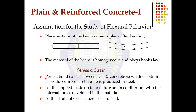The next assumption is that a perfect bond exists between steel and concrete, so whatever strain is produced in the concrete, the same strain is produced in the steel. All applied loads up to failure are in equilibrium with the internal forces in the material. At a strain of 0.003, concrete is crushed — meaning the crushing strain is assumed to equal 0.003.